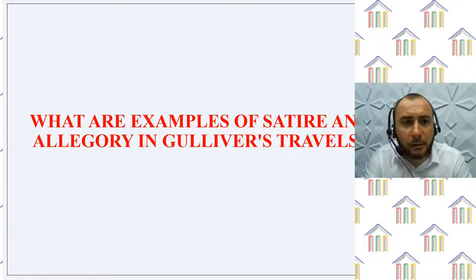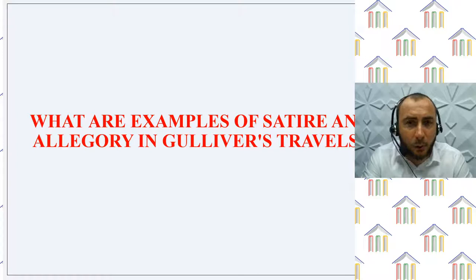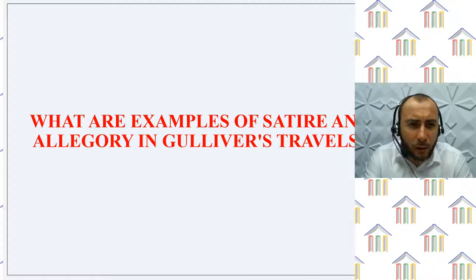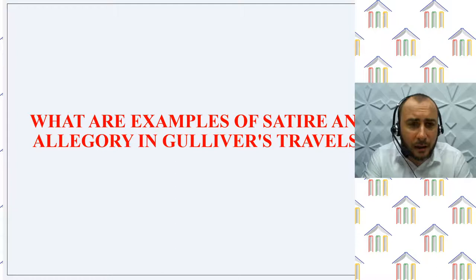Gulliver's introduction of gunpowder to the king is also satirizing European savagery. The king is morally just and humane, and is surprised that European leaders would use such a weapon against enemies and their own people without a shred of remorse. Certainly we might see the king as somewhat of a fool for failing to grasp the power behind such weapons, because that is Gulliver's reaction to him — but is he? Swift is purposely contrasting the king of an exotic land with the tyrannical king of England, who would use cannons and other weapons in his own bid for more power.